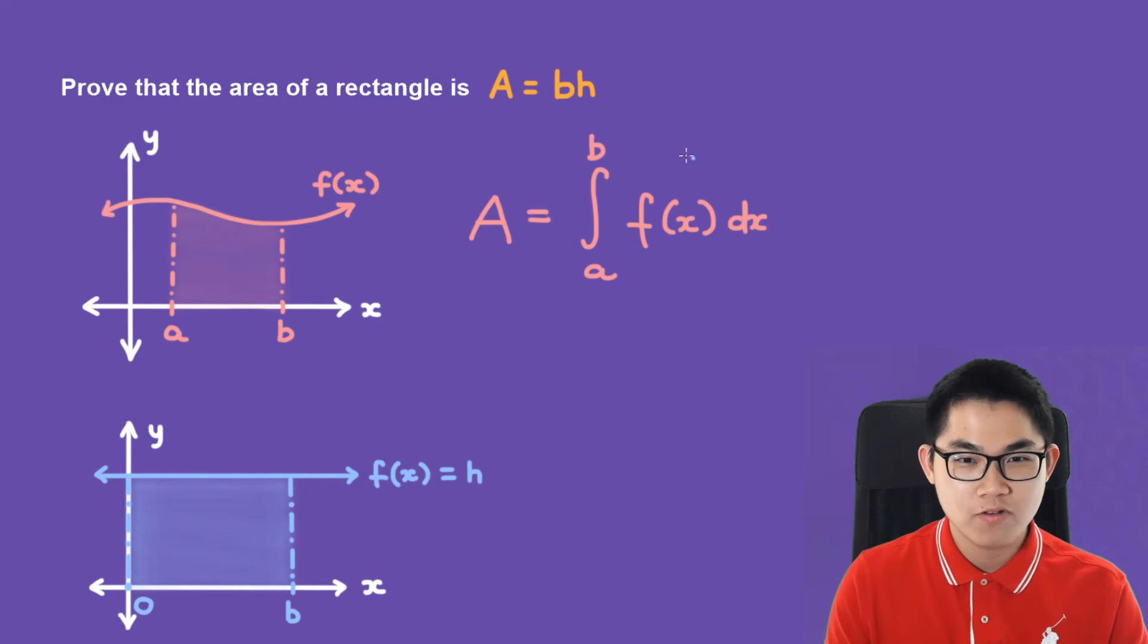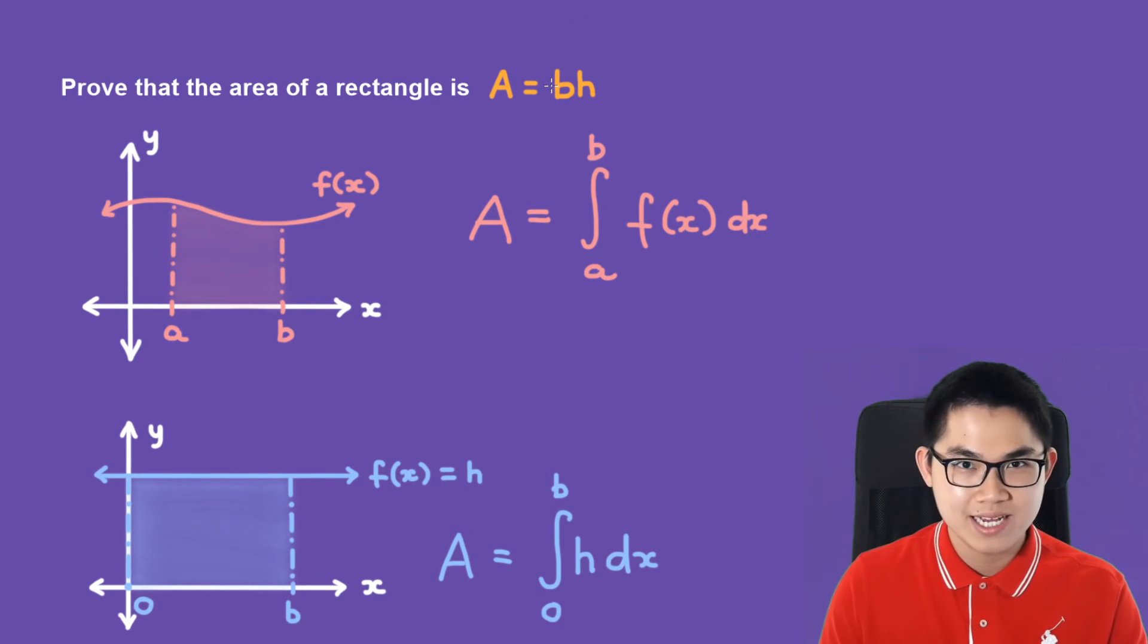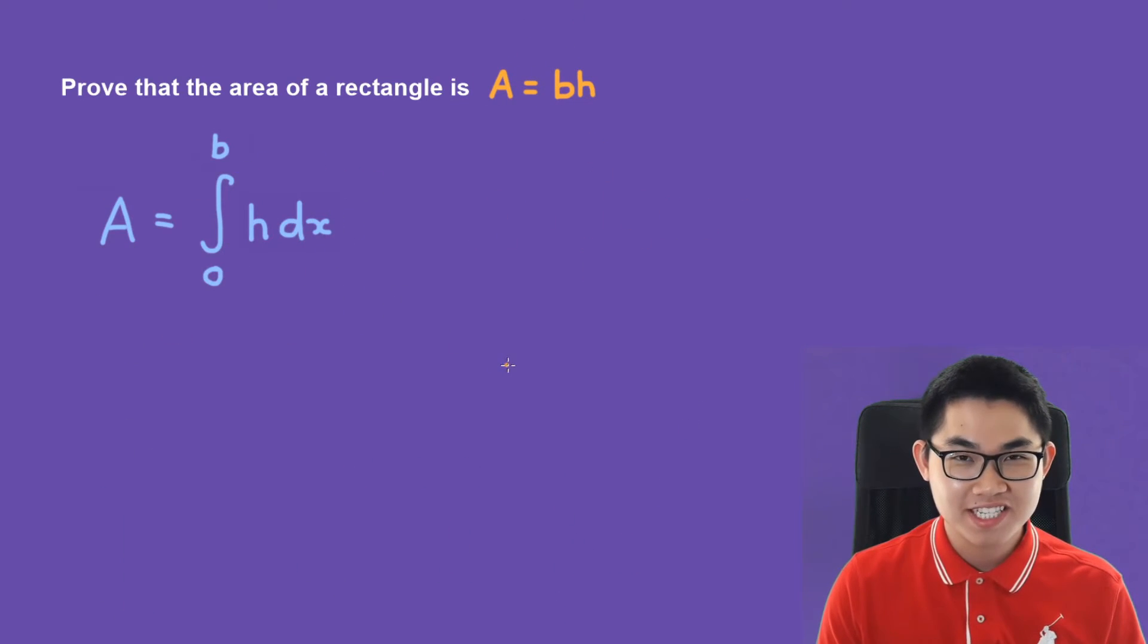Using our formula, we can say that the area of this rectangle is equal to the integral from 0 to b, where f(x) equals h and h is a constant. If we solve this integral, we will be able to prove our area formula. Let's go ahead and solve this integral.